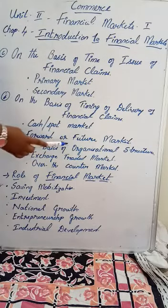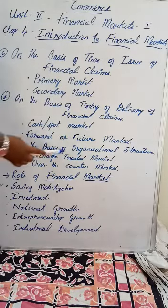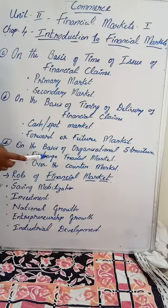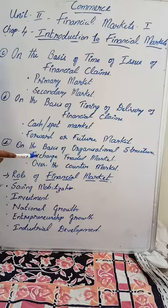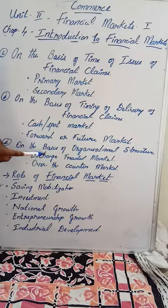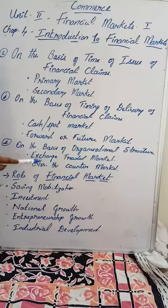The fifth type of financial market is based upon the organizational structure of exchange trade. Under this we have the exchange trade market and the over-the-counter trade market. The exchange trade market is a centralized market — meaning trading takes place inside the stock exchange with standardized procedures. Over-the-counter means marketing outside the stock exchange with customized procedures.